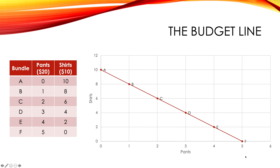At bundle A, you're only buying shirts. At bundle F, you're only buying pants. Any point on that line is a possible point of consumption when you're using all of your money — because we're looking at consumption here, at what somebody is buying. Although this works like a production possibilities frontier, we're not looking at production. We also said that any point inside the budget line is possible but not using all your money, so under-utilizing. And any point outside the budget line is unaffordable — you don't have enough money to make that happen right now.